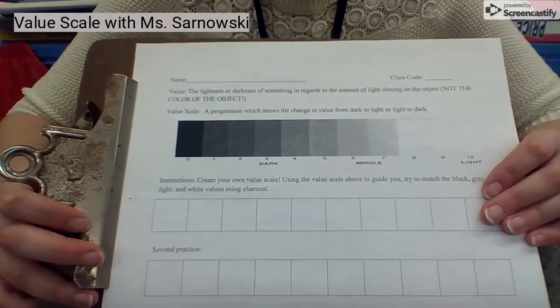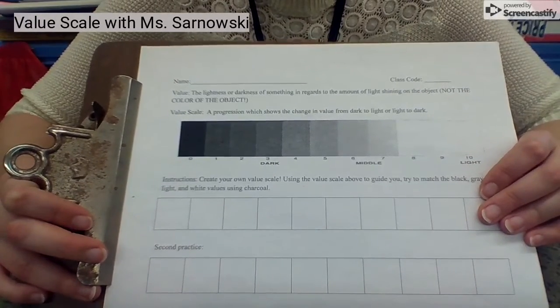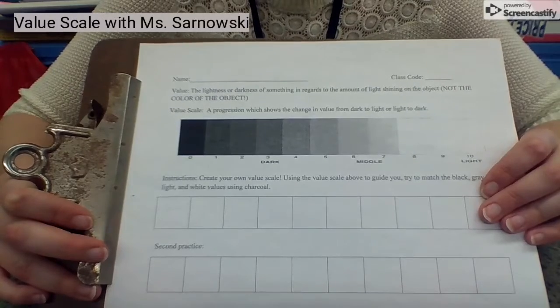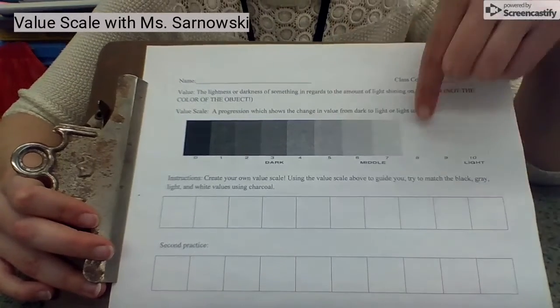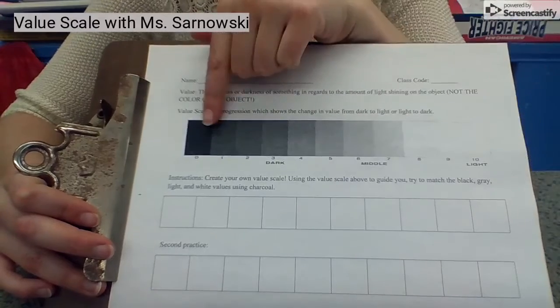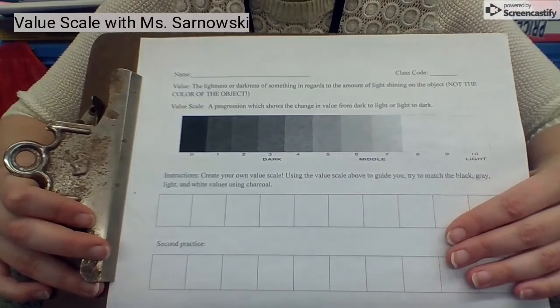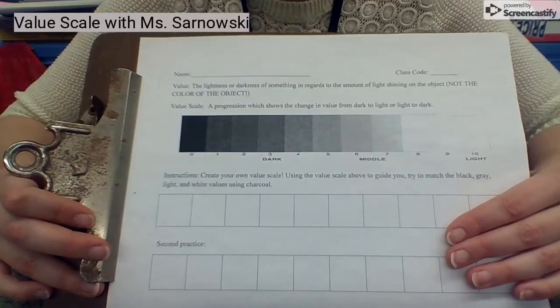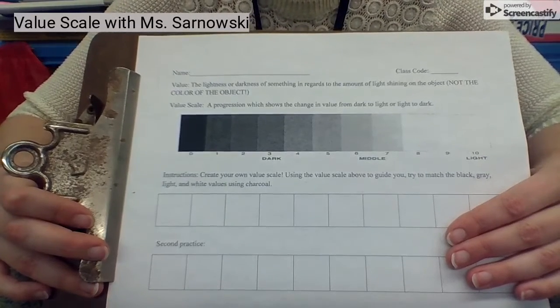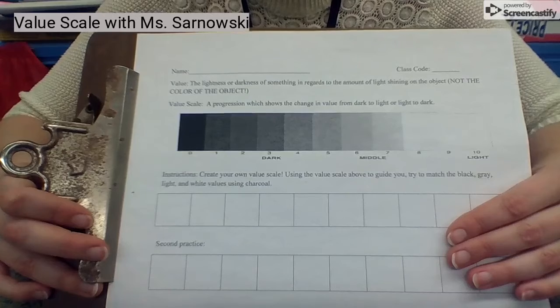All right, welcome everyone to our practice value scales. Today we're going to look at a value scale, so meaning it goes from light to dark or dark to light. Value means the lightness or darkness of something, not necessarily the color, but how much light or how much shadow is on an object.